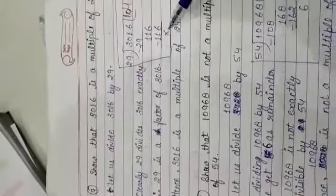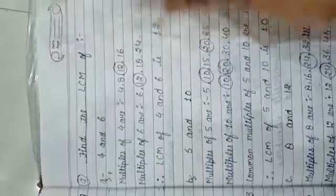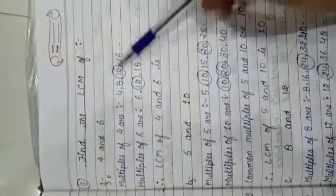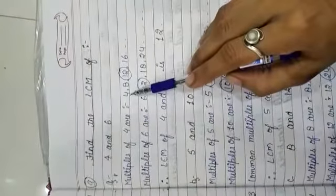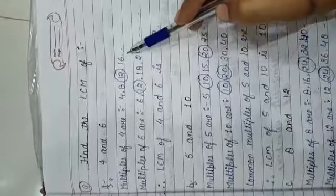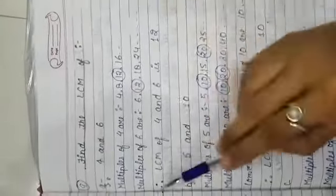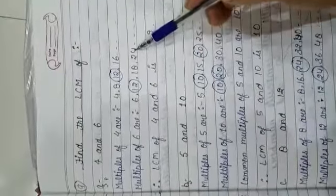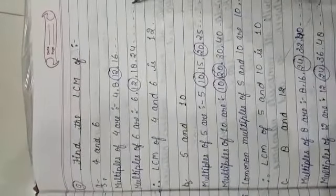Your next question is question number 9. Find the LCM of 4 and 6. We have to find the LCM of 4 and 6, so we will write the multiples. Multiples of 4 are 4 times 1 is 4, 4 times 2 is 8, 4 times 3 is 12, 4 times 4 is 16 and so on. Multiples of 6 are 6 times 1 is 6, 6 times 2 is 12, 6 times 3 is 18, 6 times 4 is 24.